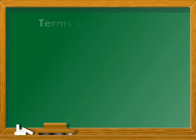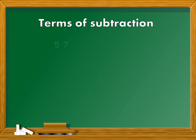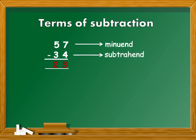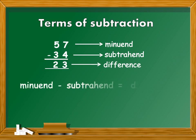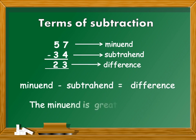We will quickly revise the terms used for the numbers in subtraction. From the previous example, we know that 57 apples minus 34 apples is equal to 23 apples. The number 57 from which we subtracted is called the minuend. The number 34 which we subtracted is called the subtrahend. And the answer 23 is called difference. This means the terms of subtraction are: minuend minus subtrahend equals difference. Always remember that the minuend is greater than the subtrahend.